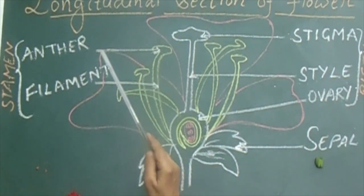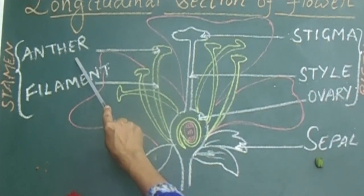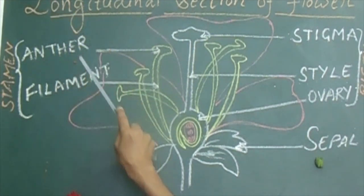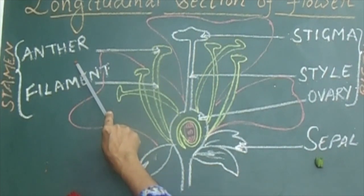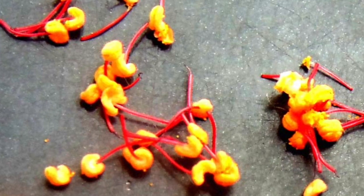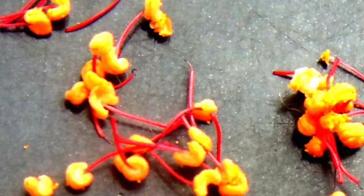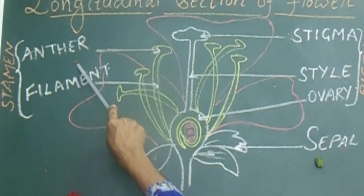Next, in stamen we have anther. Anther — what is its function? It produces male sex cells, or we call it as pollen. These are pollen grains — the yellow colored part. So anther, it produces male sex cells, that is pollen grains.